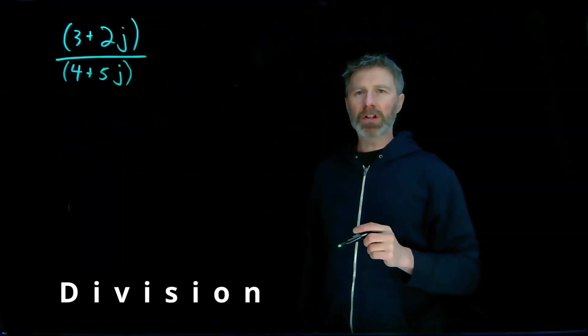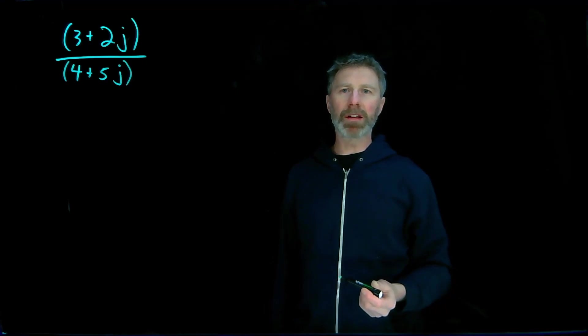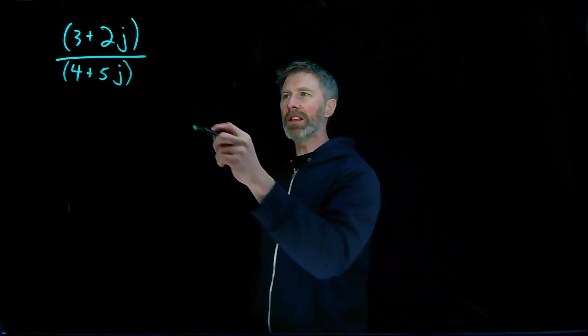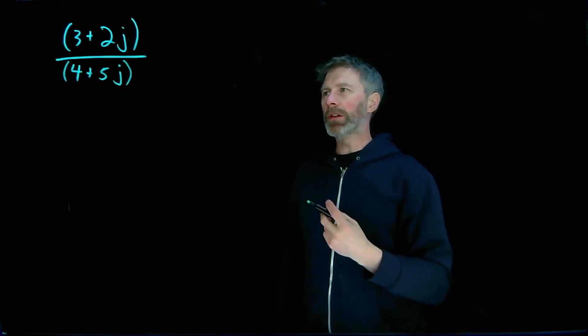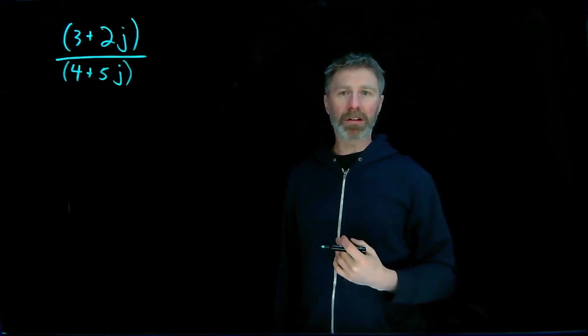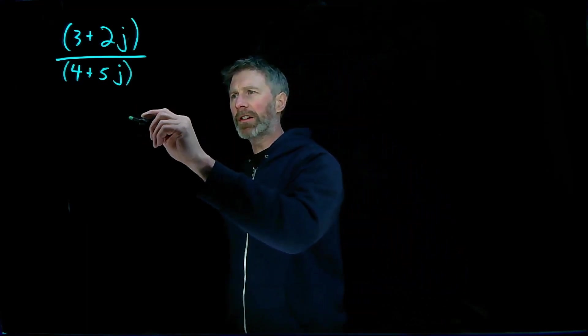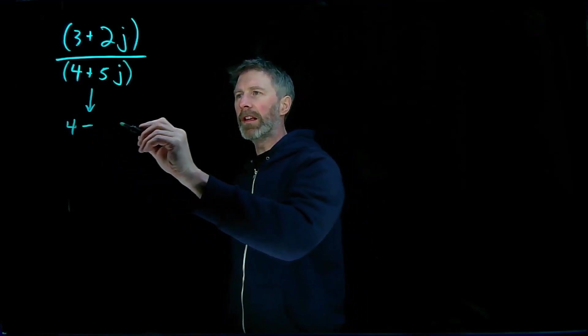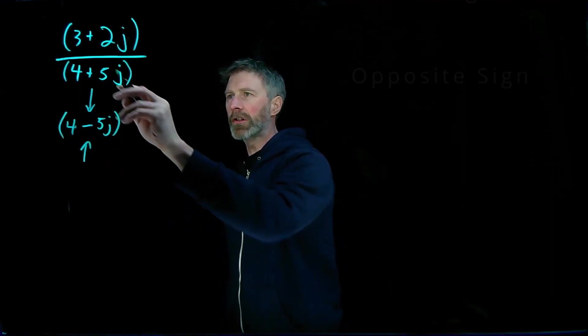And finally we're at division. And division can also be done when your numbers are in rectangular form like this. Because remember division is the same as multiplying by the inverse. The difference is, or the trick when dealing with complex numbers, is that the inverse of this number 4 plus 5j isn't just 1 over 4 plus 5j. What you need to do to get the inverse of that is to multiply the top and the bottom by the complex conjugate of 4 plus 5j. And I'm not going to get into details of what the complex conjugate is, but the complex conjugate, the definition of it, is it has the same real value, but the inverse of the imaginary value. So this is the complex conjugate of 4 plus 5j.